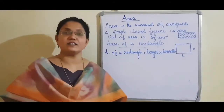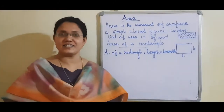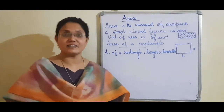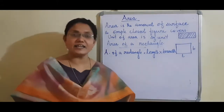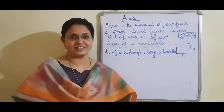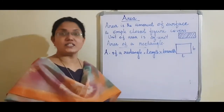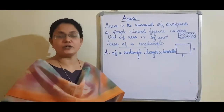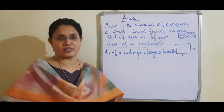If the length and breadth are given — for example, length is 10 centimetre and breadth is 5 centimetre — then its area is length into breadth, that is 10 into 5, which equals 50 square units. The unit of area is square unit.